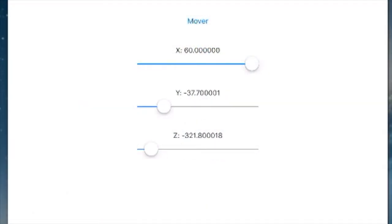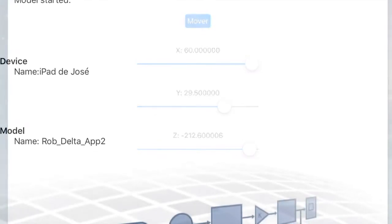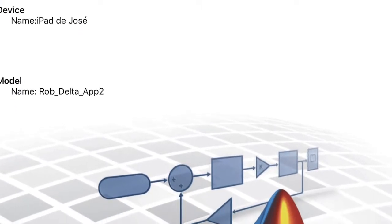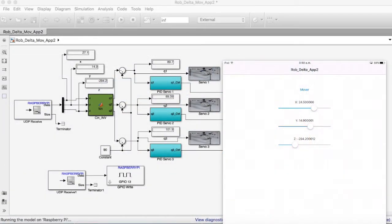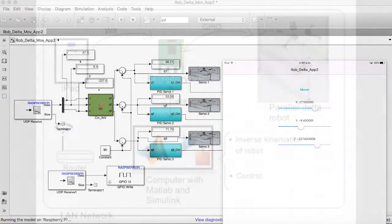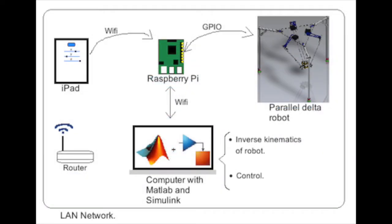We create the app for iOS where we send the data for the desired position of the robot. It works by creating one local access network between the iOS hardware, Raspberry Pi, and the host computer with Matlab and Simulink with the hardware support packages.